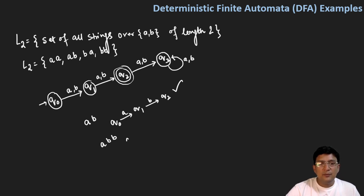Similarly if I take this string abb, from q0 you move to q1 on symbol a, on symbol b you move to q2 state, and on symbol again b you move to q3 state which is not the final state. Hence this string has got rejected.